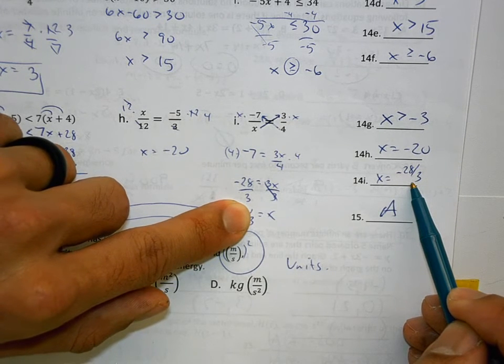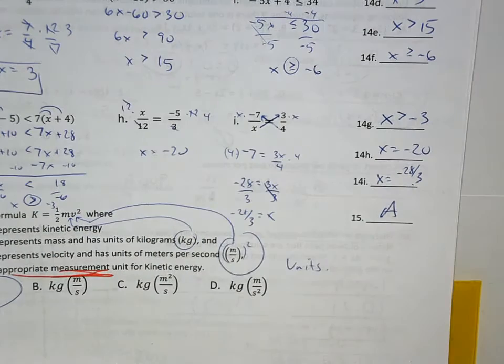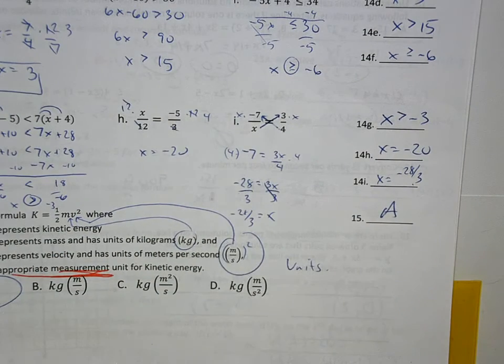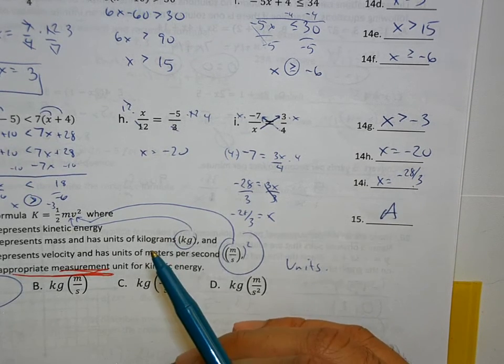3 doesn't go into 28 evenly. I just leave that as my answer. It's a fraction. Just leave it that way. If it reduces, reduce. If it doesn't reduce, it doesn't reduce. Junior. D.